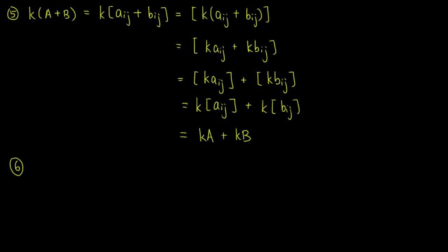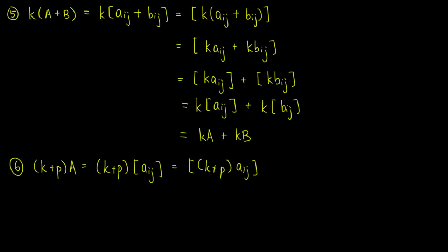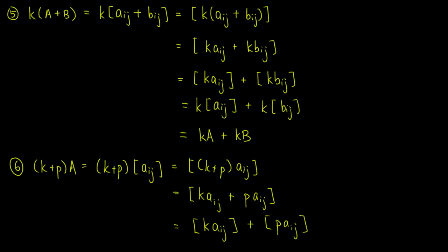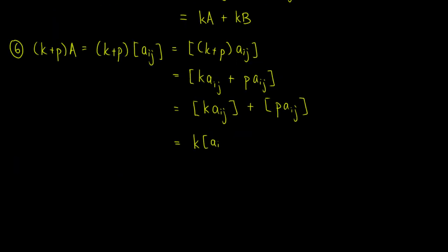For the sixth property, (K plus P) times A equals (K plus P) times the matrix with entries Aij. We can put the scalar K plus P inside to get the matrix with entries (K plus P) times Aij. By the property of the real numbers, this is equal to the matrix with entries K times Aij plus P times Aij. Since we have a sum of entries, we can break it into two matrices, giving K times the matrix with entries Aij plus P times the matrix with entries Aij, which is equal to K times A plus P times A.